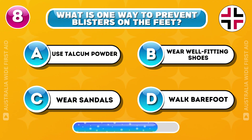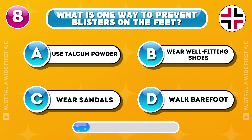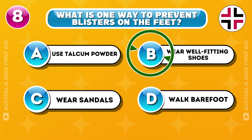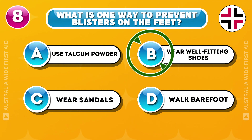What is one way to prevent blisters on the feet? Correct answer: B. Wearing well-fitting shoes reduces friction and pressure on the feet, preventing blisters from forming.